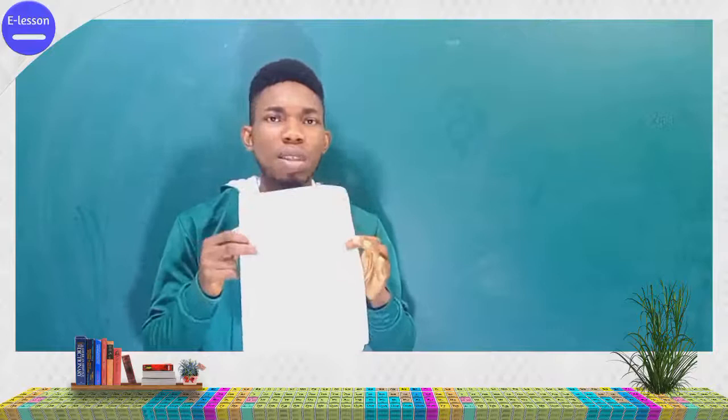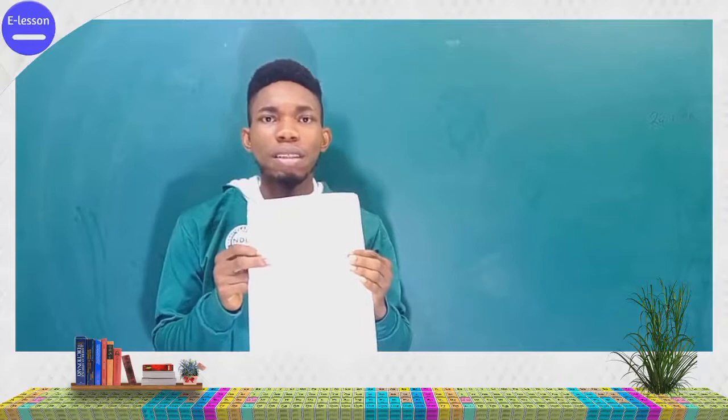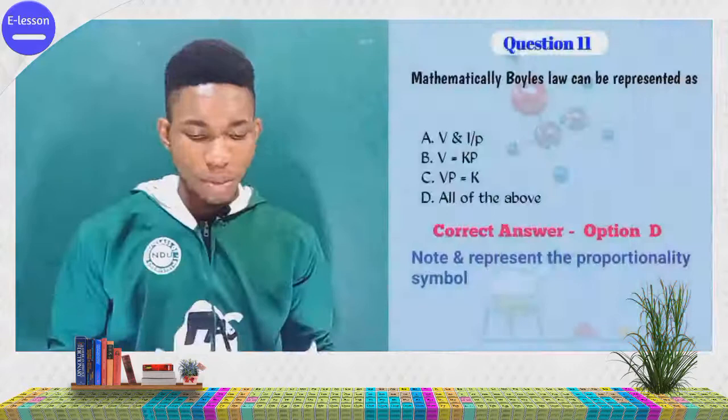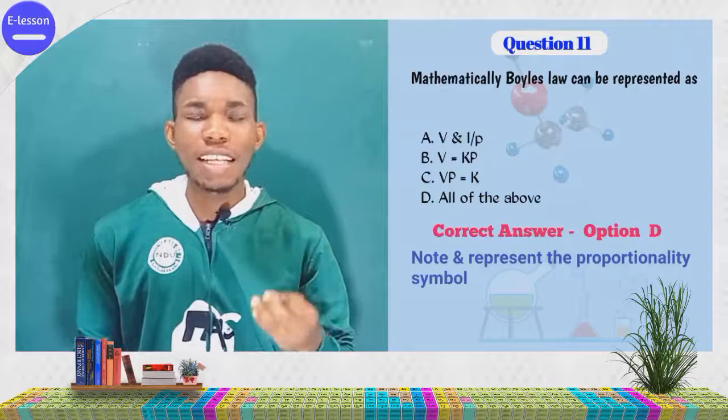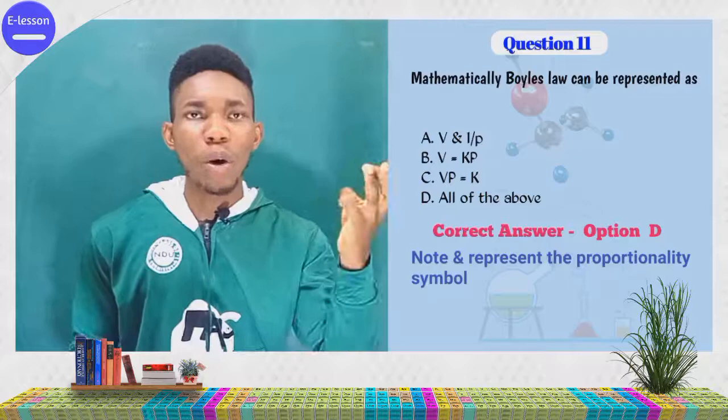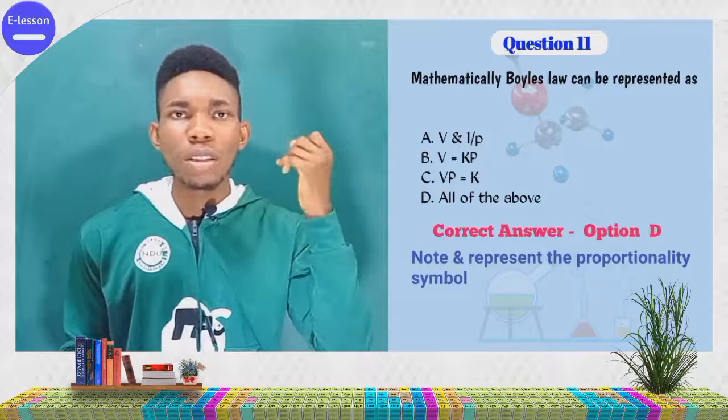Physical chemistry seems somehow difficult, but at the end of this lecture you'll see that it's very easy. We are going to take it question by question. The first question says: mathematically, Boyle's law can be represented as. Now we have different types of gas laws that explain the behavior of gases. These laws include Boyle's law, Charles's law, Dalton's law of partial pressure, Avogadro's law.